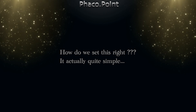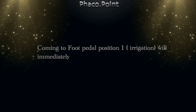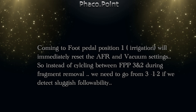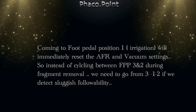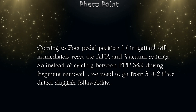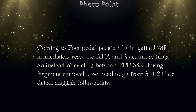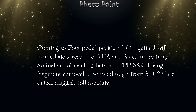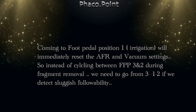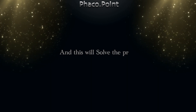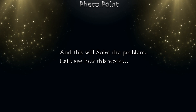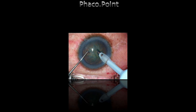So how to set this right? It's actually quite simple. We have to come to foot pedal position one, because this will immediately reset the AFR and vacuum. So instead of cycling between foot pedal positions three and two during fragment removal, we need to go from three to one — irrigation — and then back to two if we detect sluggish followability during the procedure. This will definitely solve your problem and the followability will get restored.